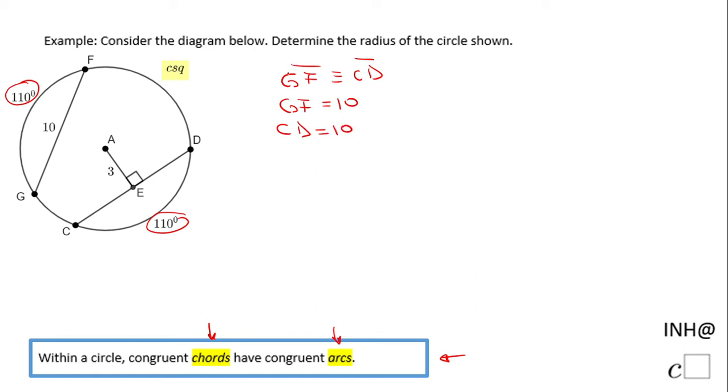I can see something else in this picture. Segment AE is perpendicular to the chord CD, which means AE bisects CD.